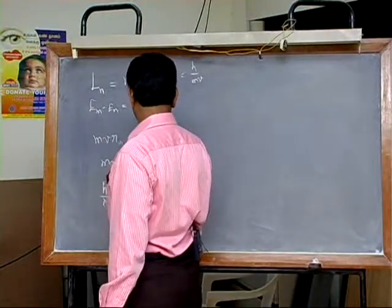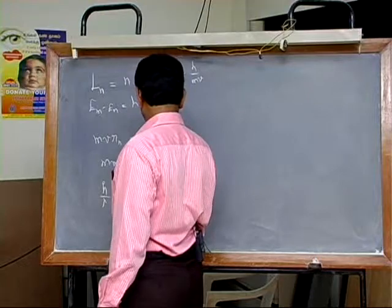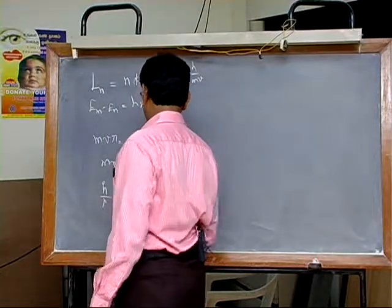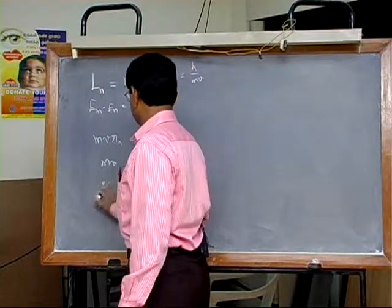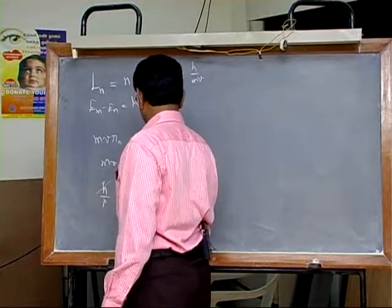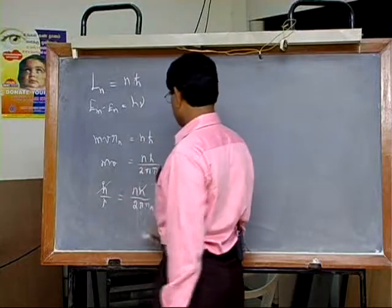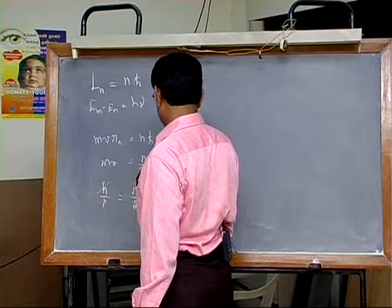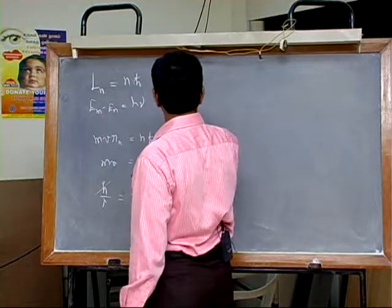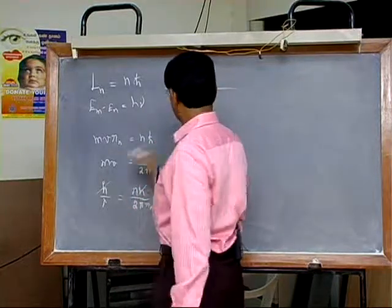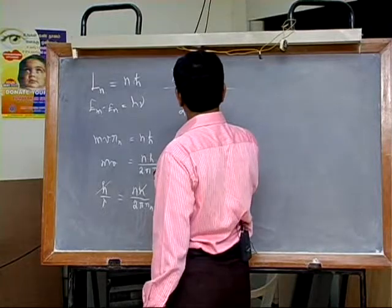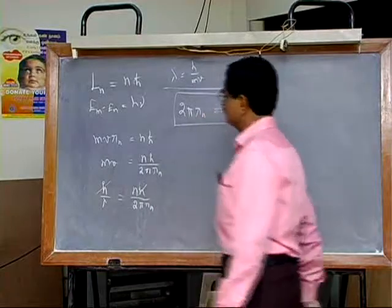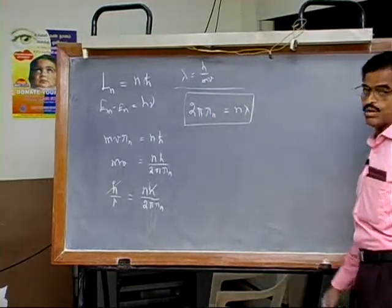What is rn? I want to add rn here. Now I am going to cancel h: nh by 2π times rn equals nλ. This is the hypothesis.